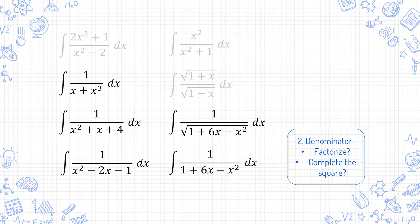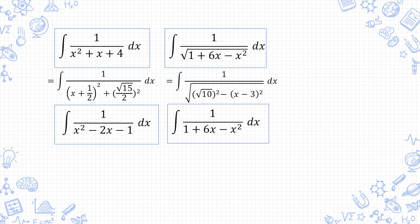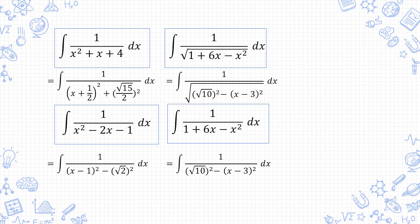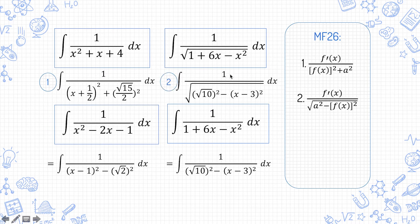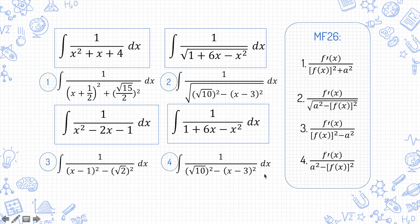For the rest of these questions, just complete the square — I will move straight to the completed square form, but if you need a recap there are plenty of tutorial videos out there, just Google 'complete the square.' After completing the square, check MF26 if any of the results can be applied. The forms to look for are: f'(x) over f(x) squared plus a squared; f'(x) over the square root of a squared minus f(x) squared; f'(x) over f(x) squared minus a squared; and f'(x) over a squared minus f(x) squared. Apply the relevant result, and if you need a recap refer to my previous video.